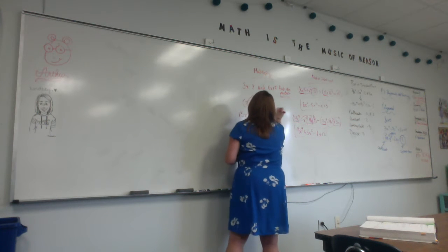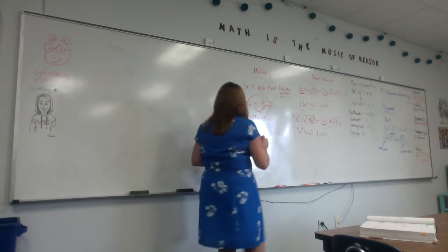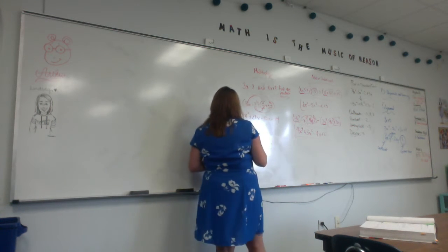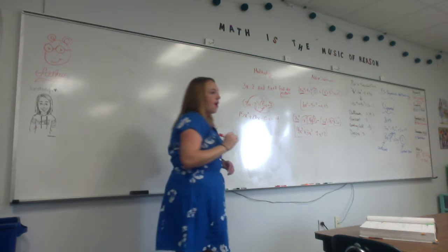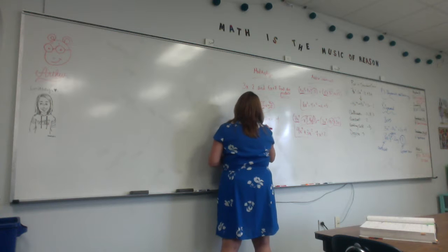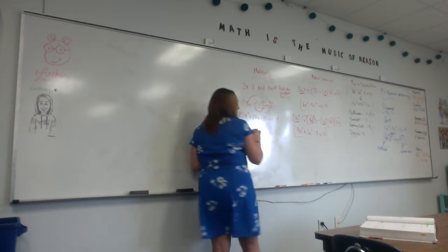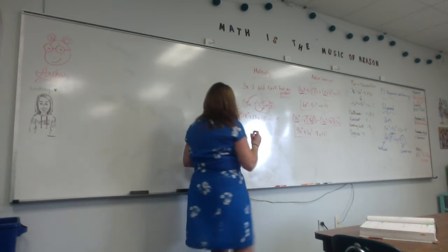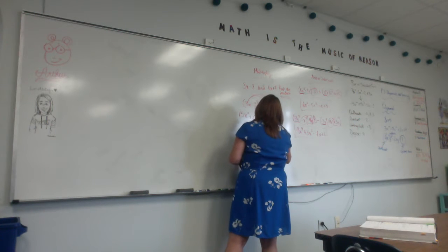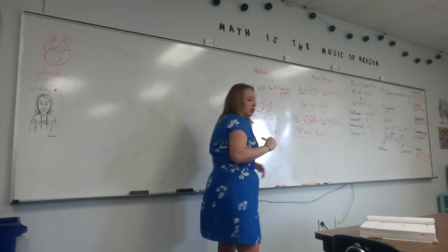What is negative 2 times 7? Negative 14. Am I done? No — you have to combine the middle parts. So I have 15x squared. What is 21x minus 10x? 11x minus 14. That's how I can multiply them together.